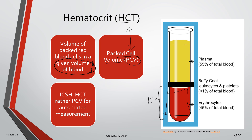The ICSH, which stands for the International Council for Standardization and Hematology, has suggested that the term hematocrit should be used rather than PCV when the result is a measurement from an automated analyzer. This is because automated analyzers do not actually pack the red blood cells, but instead use a different technology — an example being impedance technology, where the analyzer checks each individual red blood cell to arrive at a hematocrit value. With this principle, the term hematocrit is more proper.